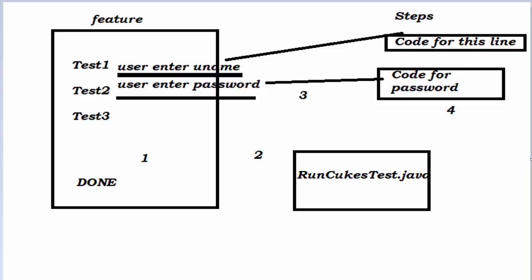Welcome to the testing world. We have seen how to create a feature file, run a Cucumber test file, and how to create mapping. Now we need to write code for steps — for each of the steps that we are going to execute in the feature file, we need to write code for that.